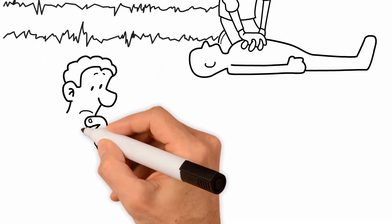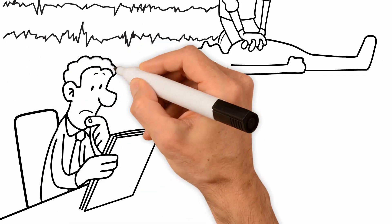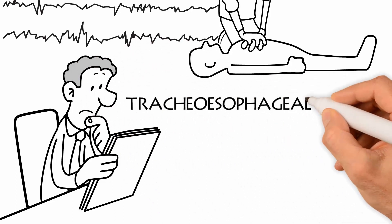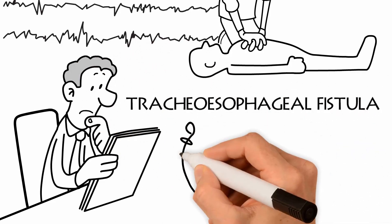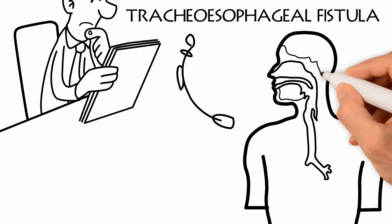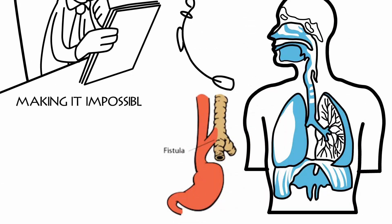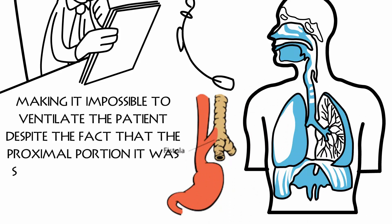An autopsy performed the next morning found that the 80-year-old man had a rare, untreatable condition known as tracheal esophageal fistula. The tip at the distal end of the endotracheal tube had passed from the trachea through the fistula and into the esophagus, making it impossible to ventilate the patient despite the fact that the proximal portion was situated properly in the glottis between the vocal cords.